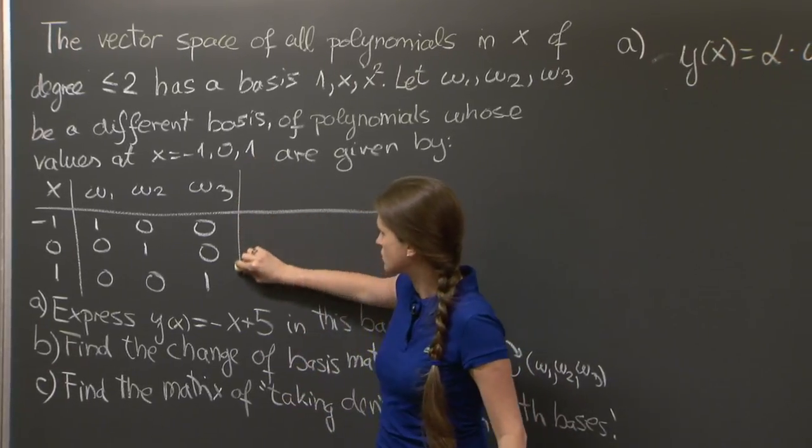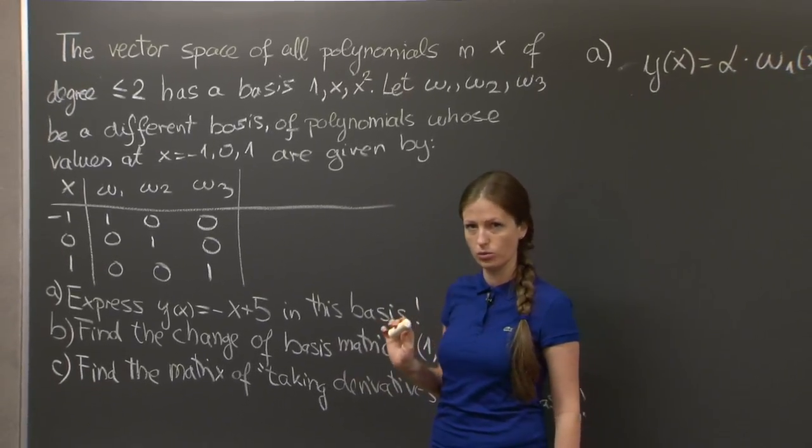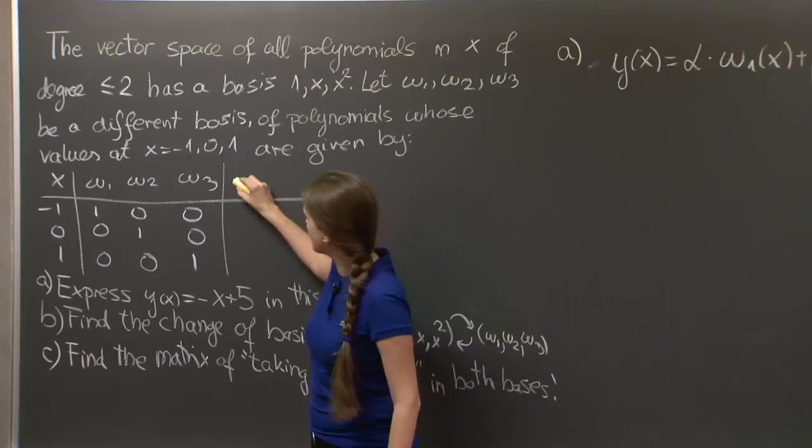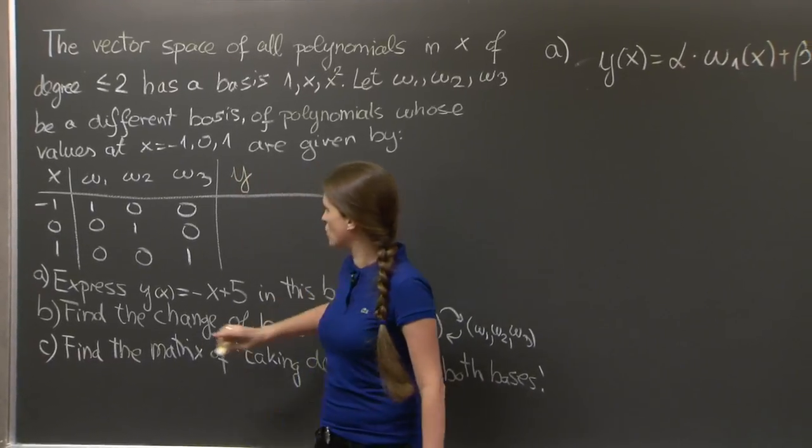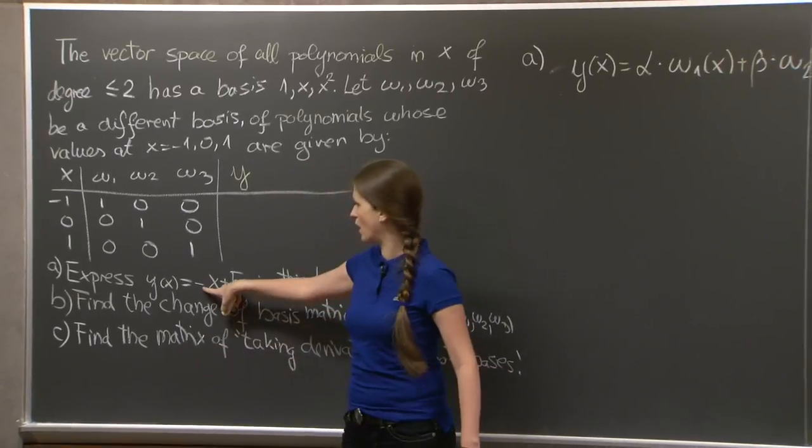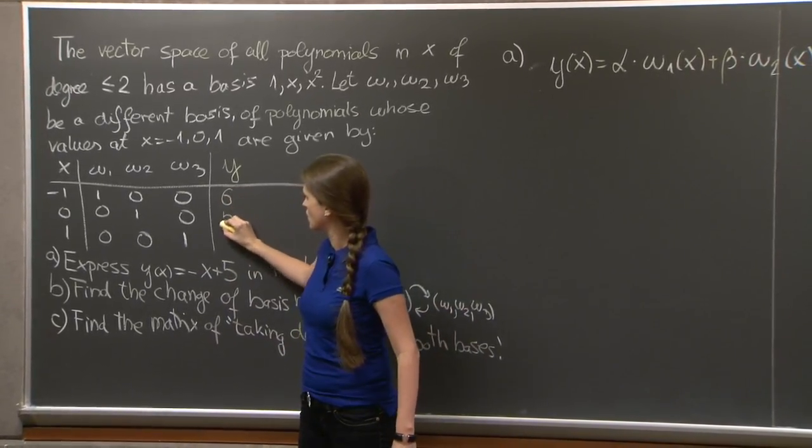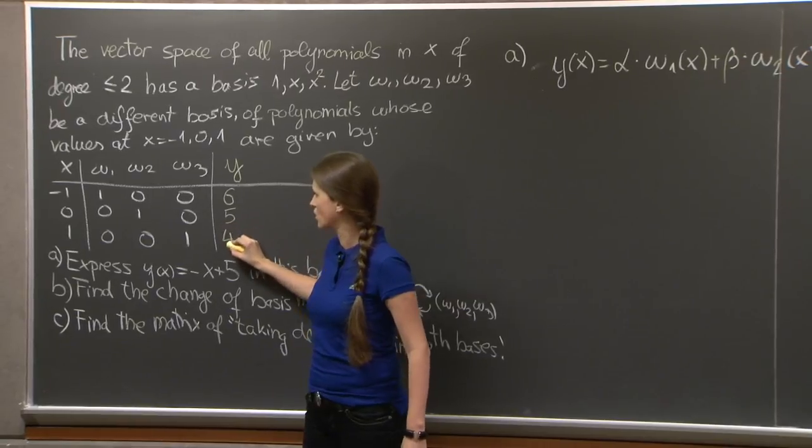However, there is a trick. Let's try to see if we can do it without finding w1, w2, and w3 explicitly. So let me try to see what are the values of y at these points. So y is -x + 5. So the values are 6, 5, and 4.